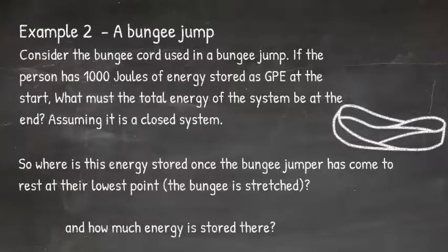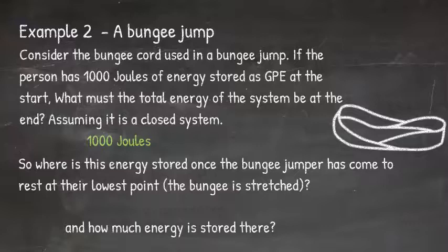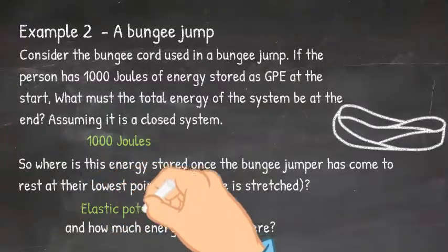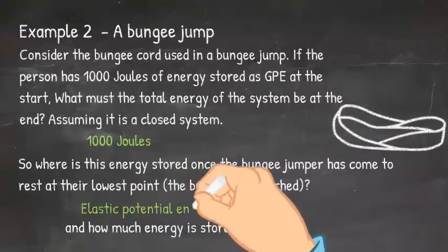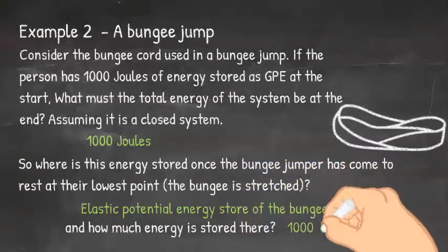So according to conservation of energy, if there's 1000 joules of energy at the start, there must be 1000 joules of energy at the end — of course, if it's a closed system. At the lowest point, the energy is in the elastic potential energy store of the bungee. And how much energy is there? As we said, 1000 joules of energy.